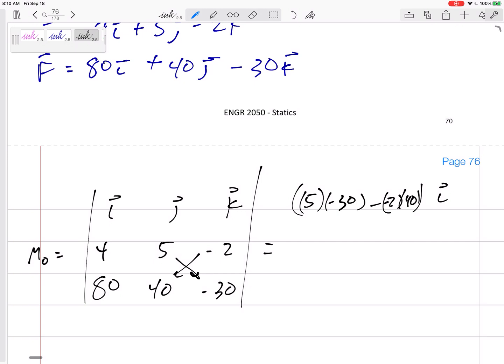Alright, maybe I shouldn't go so fast. The j component would be that minus that. It would be that minus that. 4 times negative 30 minus negative 2 times 80. See how easy it would be to mess up or miss one of those negatives.